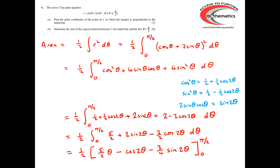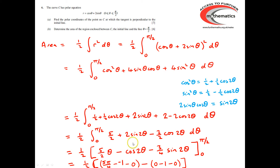Performing the integration gives (5/2)θ − cos 2θ − (3/4)sin 2θ. Evaluating between 0 and π/2 and multiplying by ½: at θ = π/2 we get 5π/4 − cos π − (3/4)sin π = 5π/4 + 1 − 0. At θ = 0 we get 0 − 1 − 0. So the area is ½ × (5π/4 + 2) = 5π/8 + 1.